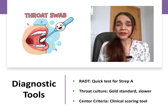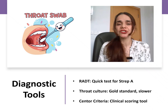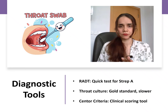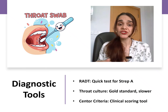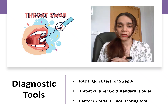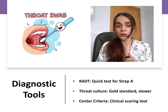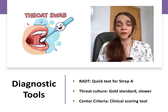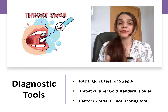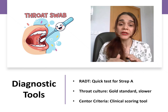To accurately identify strep throat, we use several tools. The easiest one is a rapid antigen detection test, which provides results in minutes and is commonly used in clinics when you visit your GP. Throat culture is more sensitive and remains the gold standard, but it takes one to two days for results. The Centor criteria is a clinical scoring system based on symptoms like fever, tonsillar exudate, and absence of cough. A high score can guide whether we test or treat, helping avoid overtreatment and ensuring antibiotics are used only when truly needed.